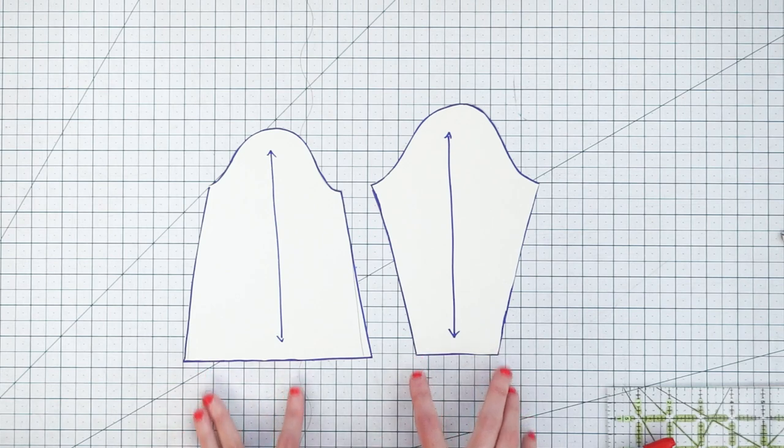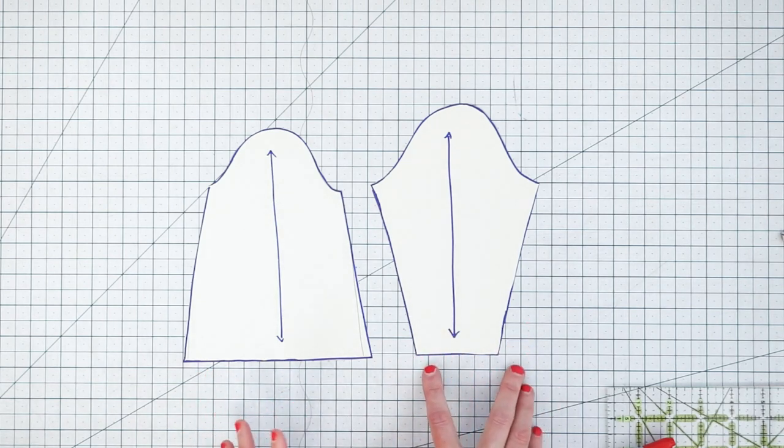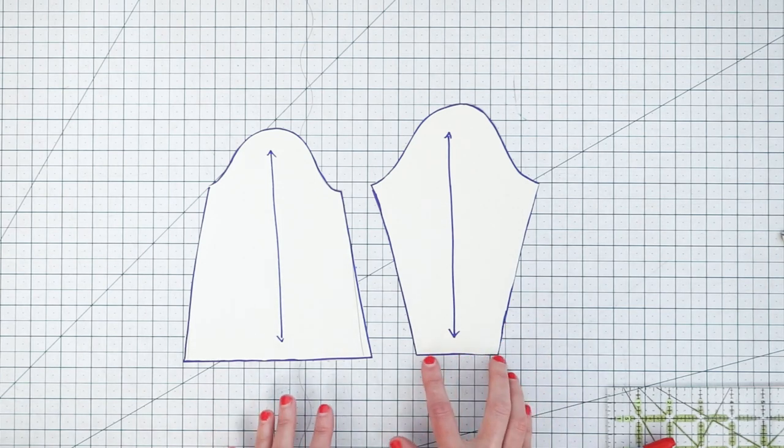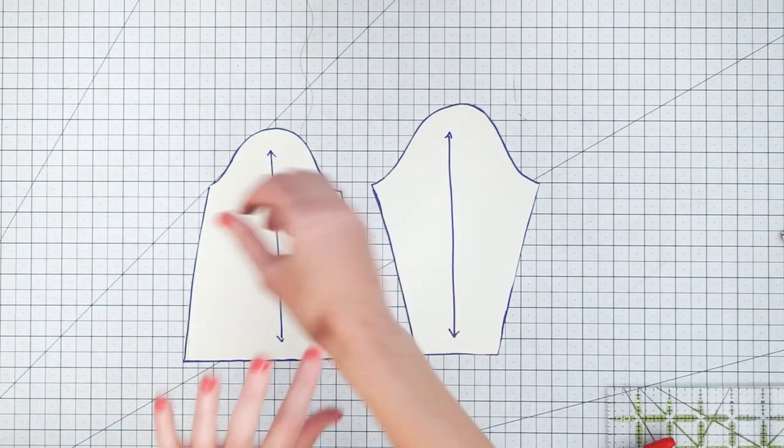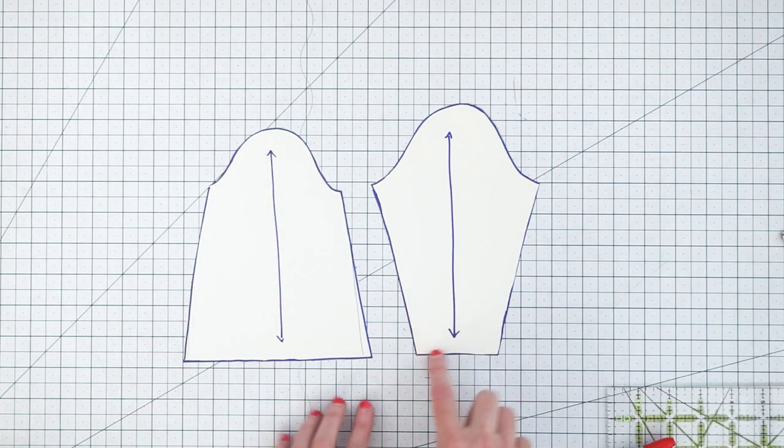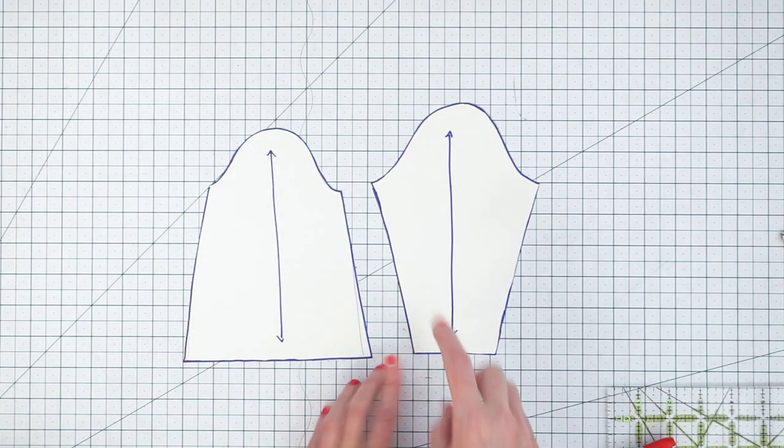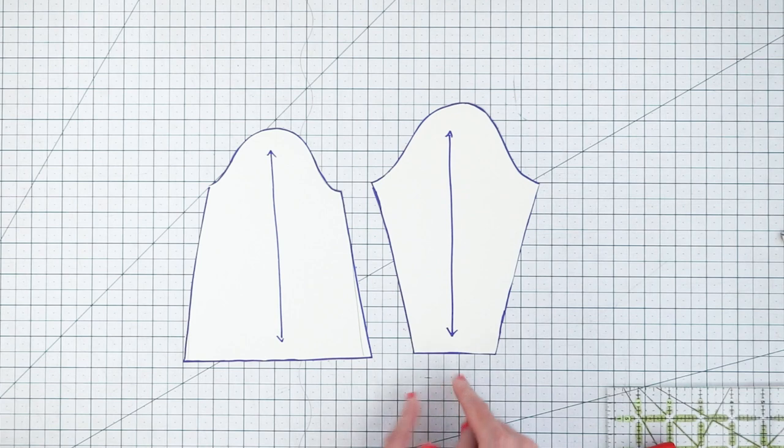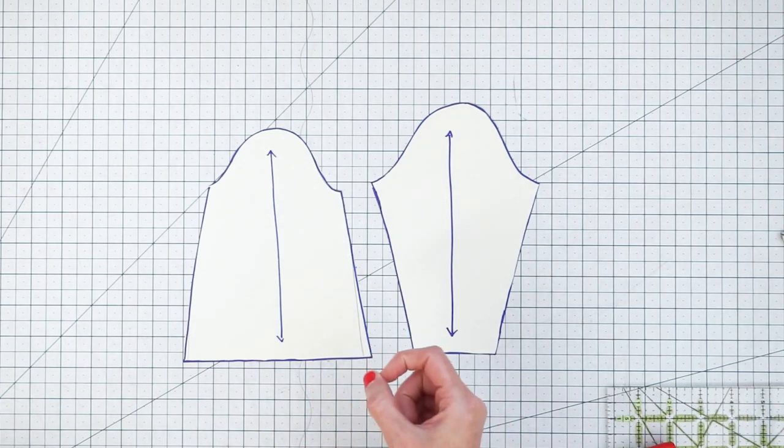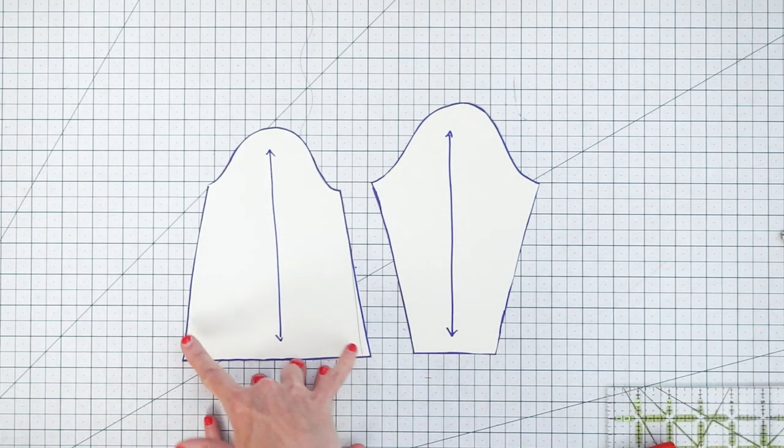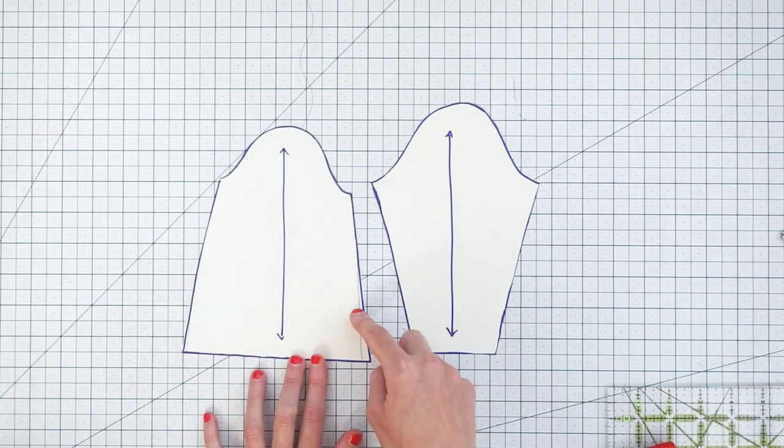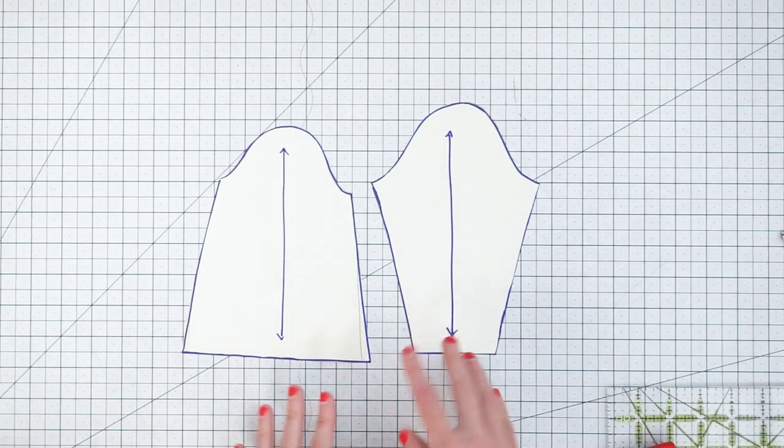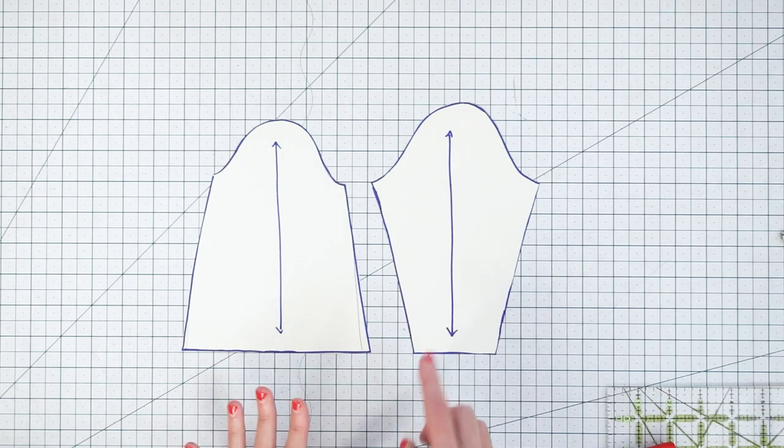So you might be tempted just to lengthen or shorten right from the bottom of the pattern and that doesn't always give you the best results. For one, if this bottom of the pattern piece is going to be fitted into a cuff, then you might end up with the wrong circumference of the sleeve to fit the cuff. Or if you're lengthening a tapered sleeve you might get a sleeve that's just too tight around your wrist. Or if you're shortening a more bell-shaped sleeve then you'd end up with a shorter circumference around your wrist and it might not have the same look or might not fit the same way that you wanted.